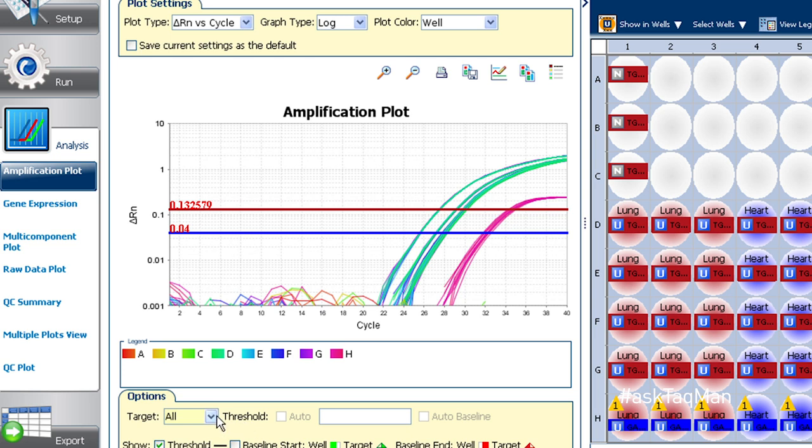If I want though, I can switch any one or all of my thresholds to manual mode, then move the line up or down with my mouse.